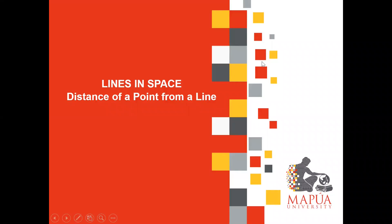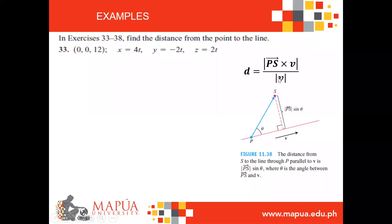Good day. Let us work on some examples from this lesson on line space, specifically the distance of a point from a line. Let us recall the concept of distance from a point to a line. We have a point S that is perpendicular to line L, and we are going to find the distance of point S to line L. The formula to be used is equal to the magnitude of the cross product of vector PS and vector b, all over the magnitude of b.